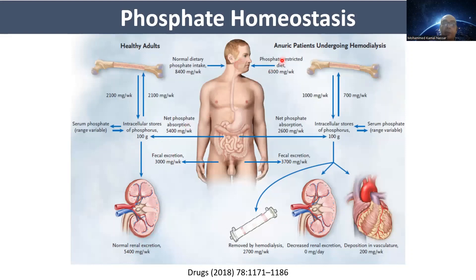In anuric patients undergoing dialysis, with the loss of renal function, there is a positive phosphate balance of around 200 mg per week that will deposit in the vasculature, causing vascular calcification, in addition to disordered mineral and bone disorders in CKD.